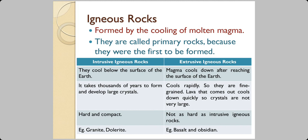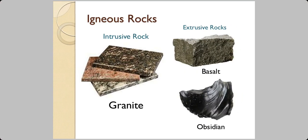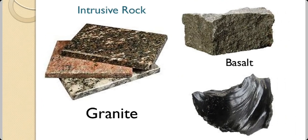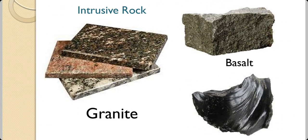Intrusive igneous rocks are hard and compact. But the extrusive igneous rocks are not as hard as the intrusive igneous rocks. The examples of intrusive igneous rocks are granite and dolerite. Many of you might have seen, you might have the flooring made up of granite in your house. The example of extrusive igneous is basalt and obsidian. Basalt is a common stone that you find outside your house. Here are some pictures: granite cut in the form of tiles and basalt and obsidian.